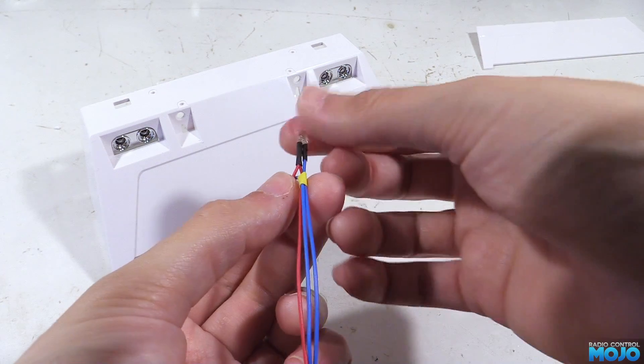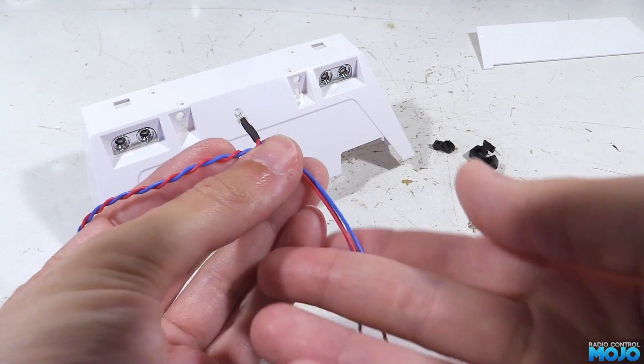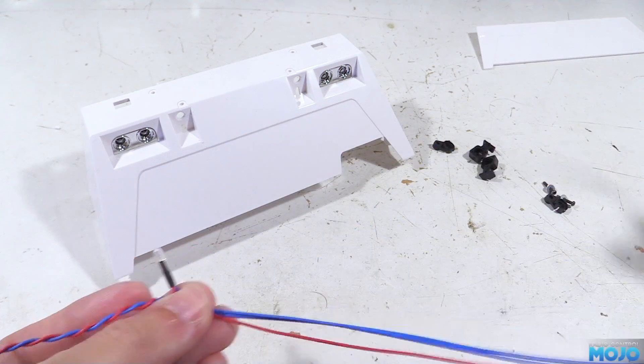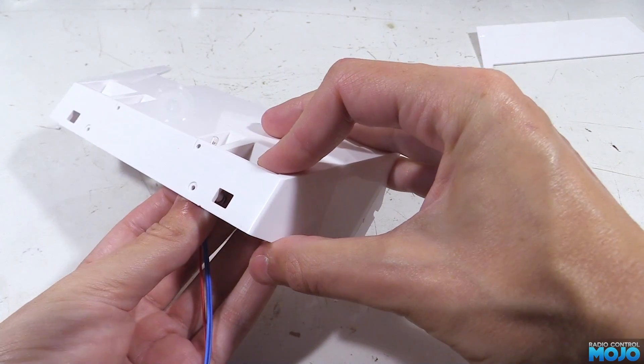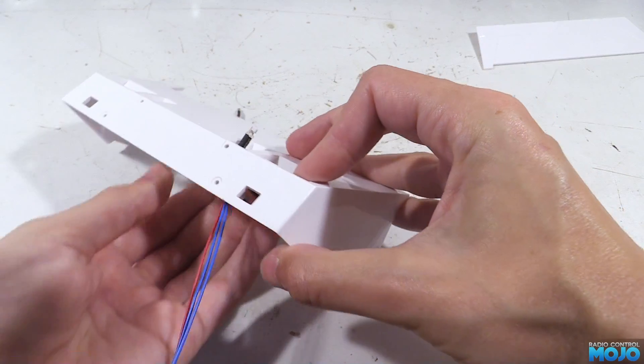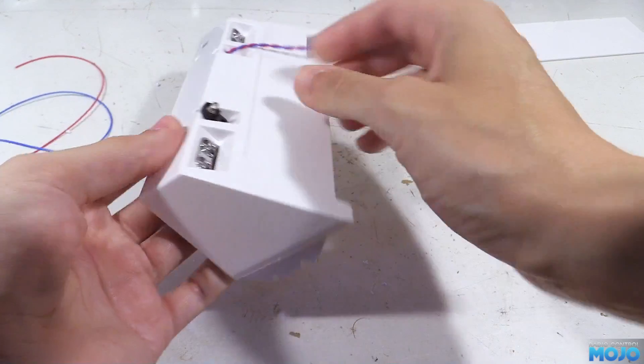Here we have a simple harness for the work lights. It's common anode so the anodes both connect to the red wire. Then we have two blue wires, one for each cathode. That means that when we hook them up we'll be able to turn them on individually.